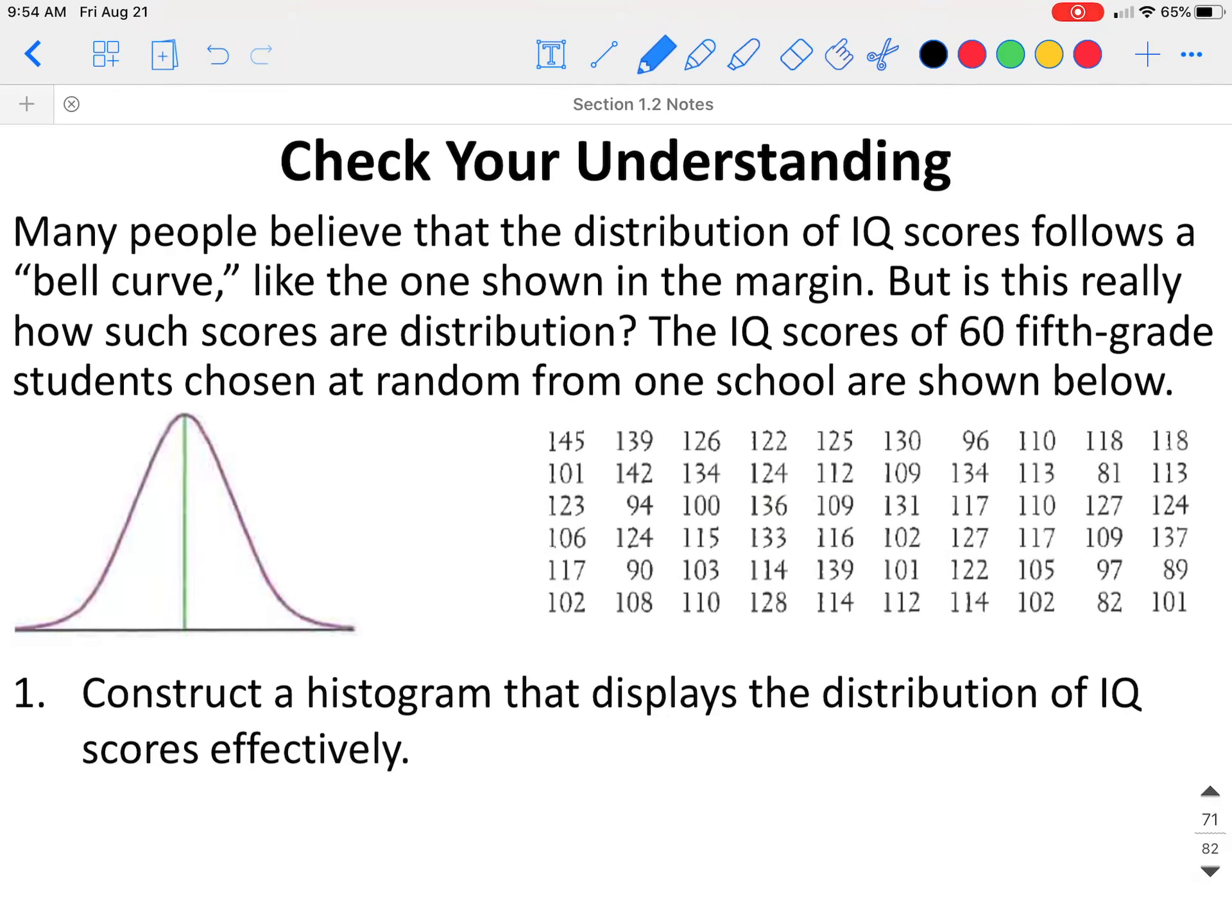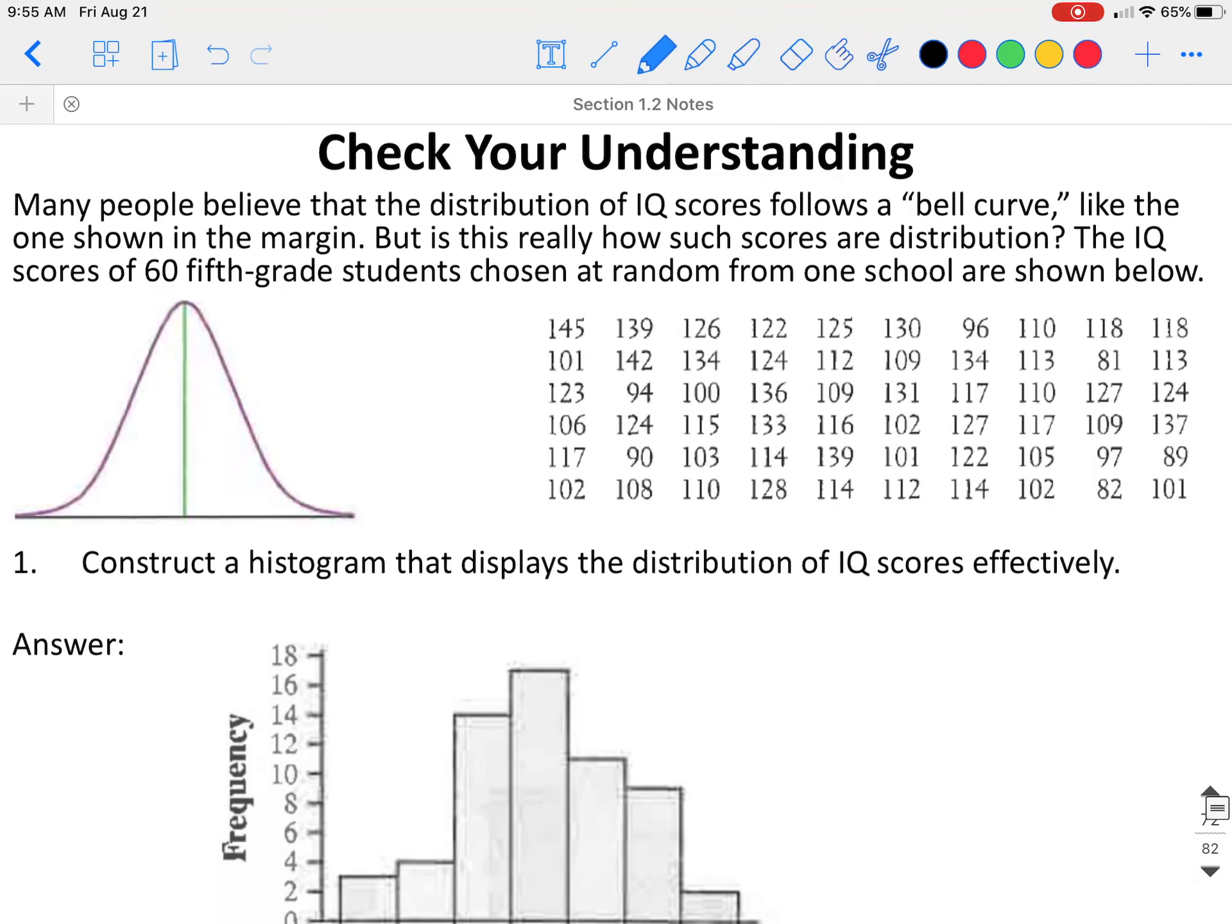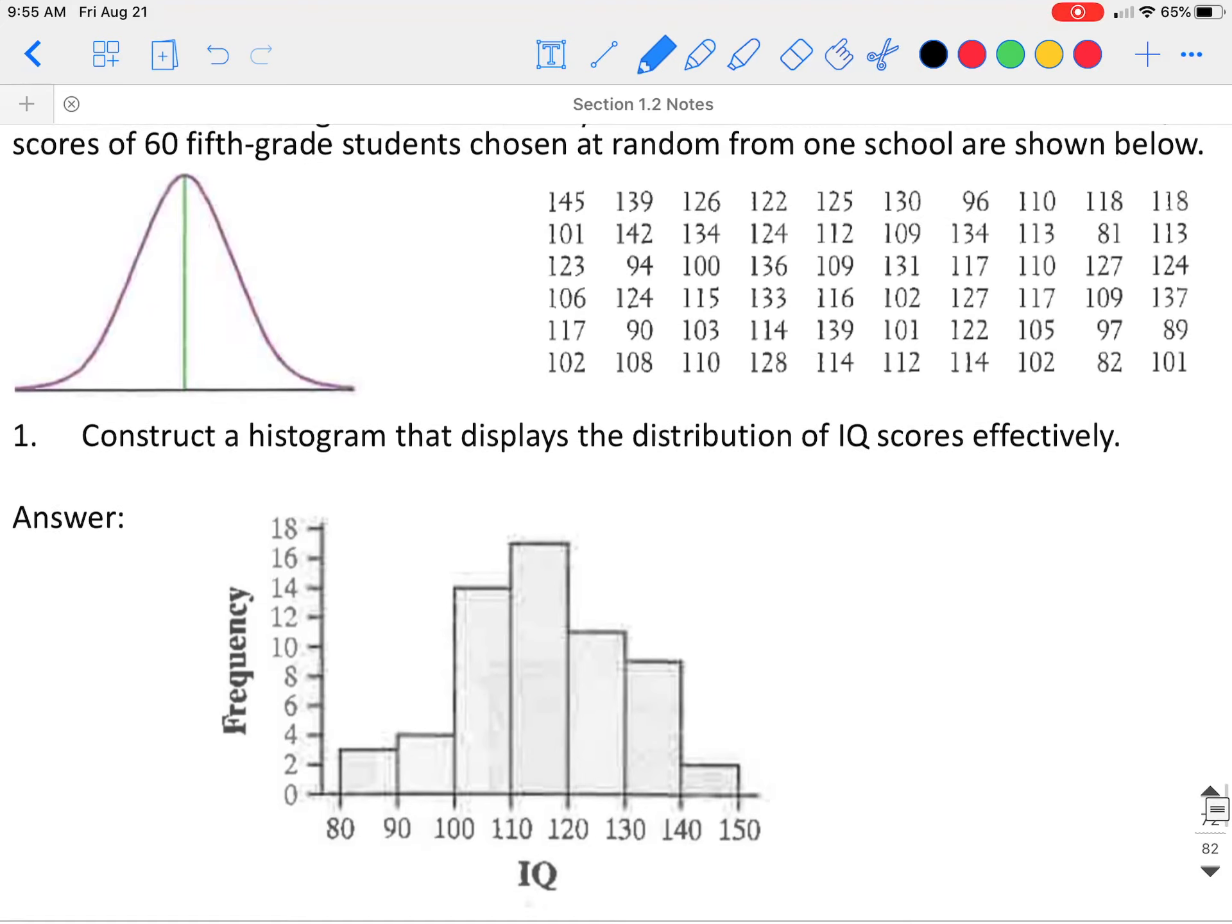Let's check our understanding. Many people believe that the distribution of IQ scores follows a bell curve like the one shown in the margin. But this is really how such scores are distributed. The IQ scores of 66 fifth grade students chosen at random from one school are shown below. We need to construct a histogram that displays the data. You could do this by hand or you can put all of these data values into your calculator.